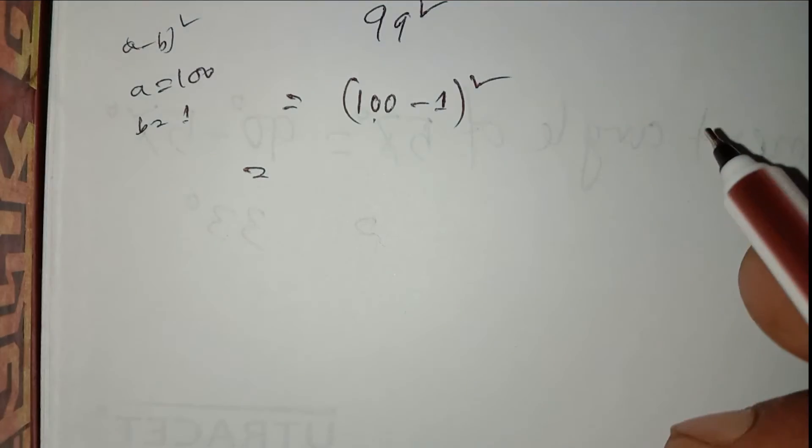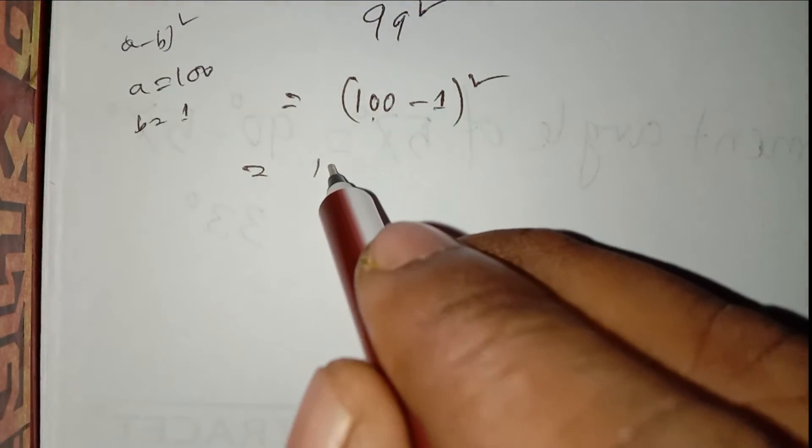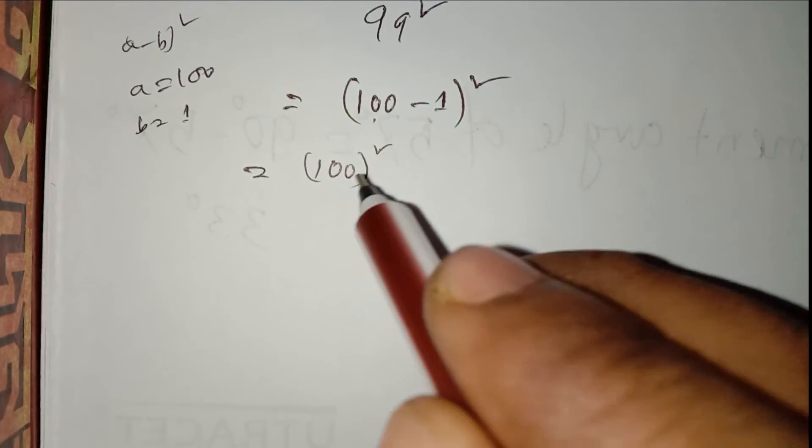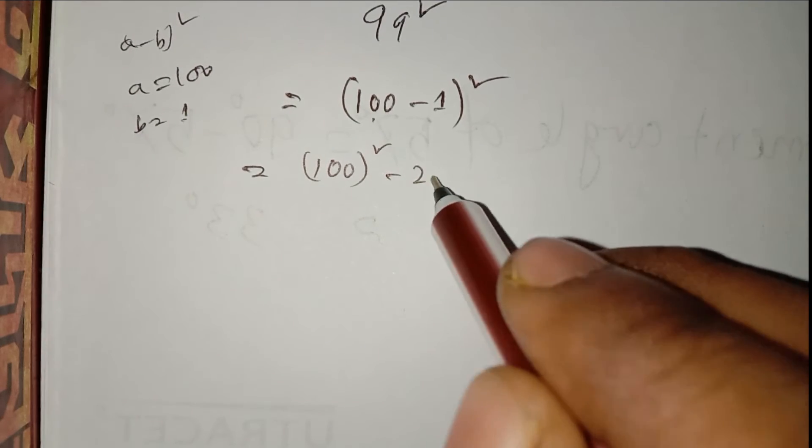So what will be our formula? a square, that means 100 square, minus 2 times a, that means 100, times b, that means 1, plus b square, that means 1 square.